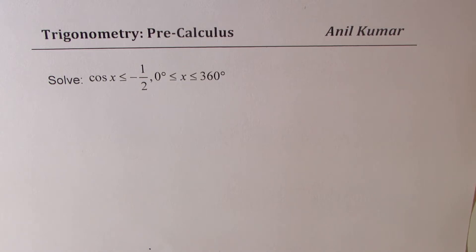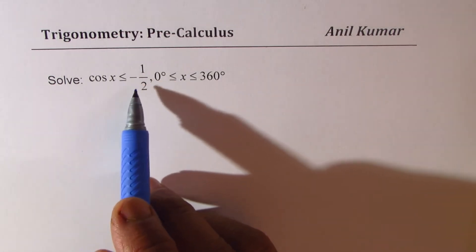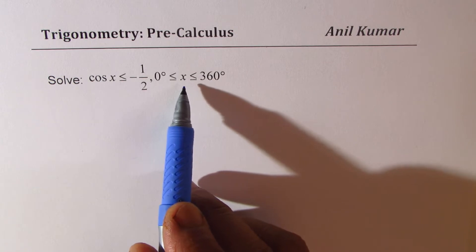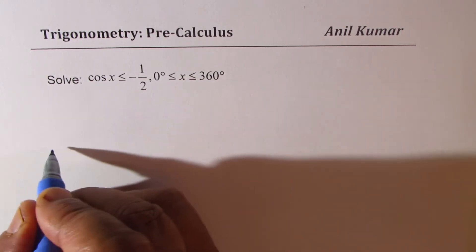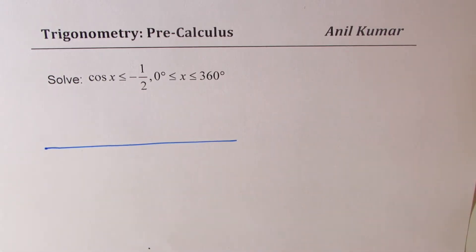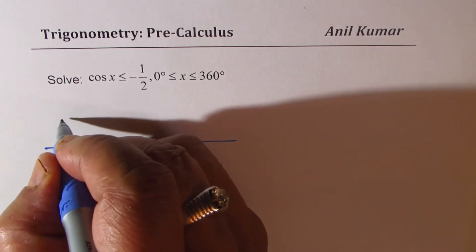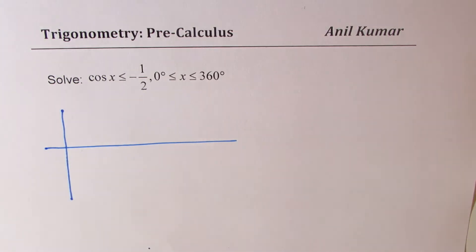The question here is to solve cos x less than or equal to minus half, where x is between 0 to 360 degrees. To solve this, we will have two different approaches. One, we could always sketch the graph and then find a solution.